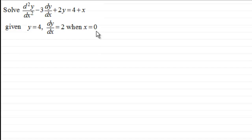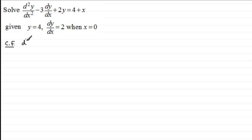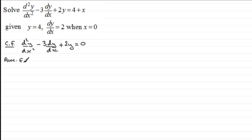I'm assuming you're familiar with finding the general solution of these kinds of equations. If not, you can check out my website examsolutions.net where there are videos that demonstrate this. So let's see how we get this particular solution. First of all, we need to work out the complementary function — CF for short. In other words, we need to solve the equation d²y/dx² minus 3 dy/dx plus 2y equals 0.